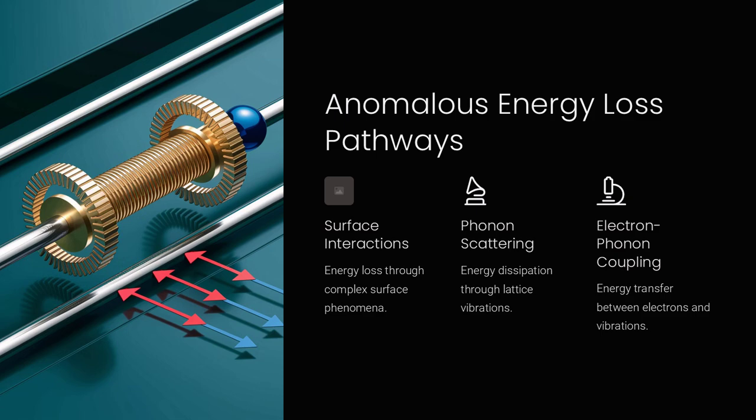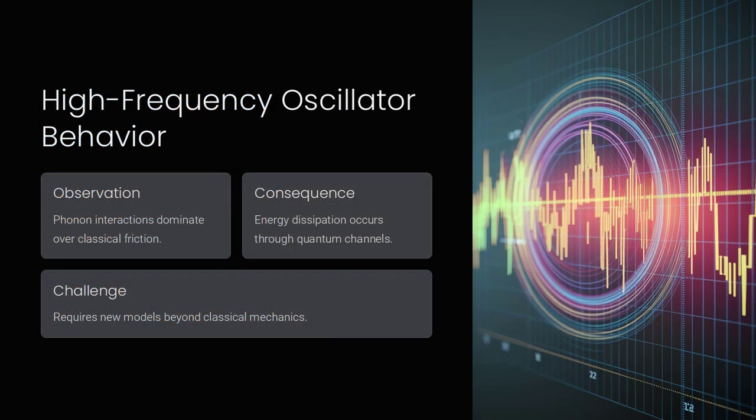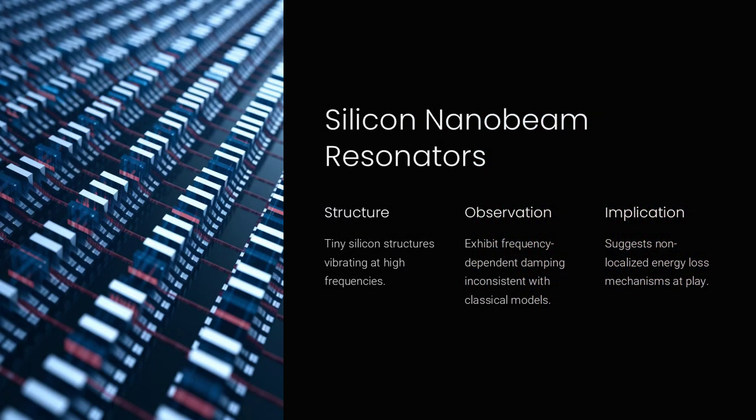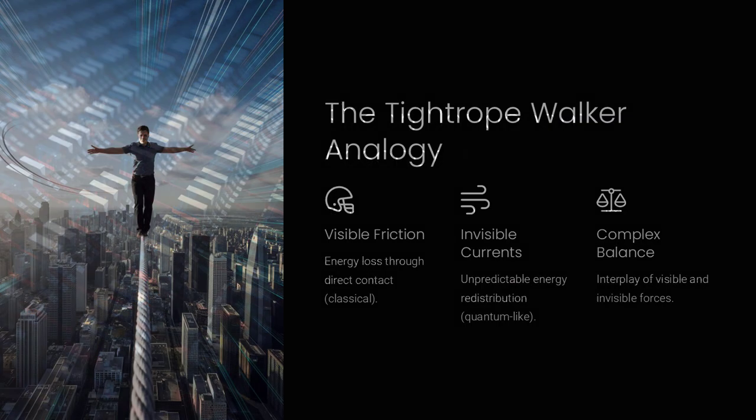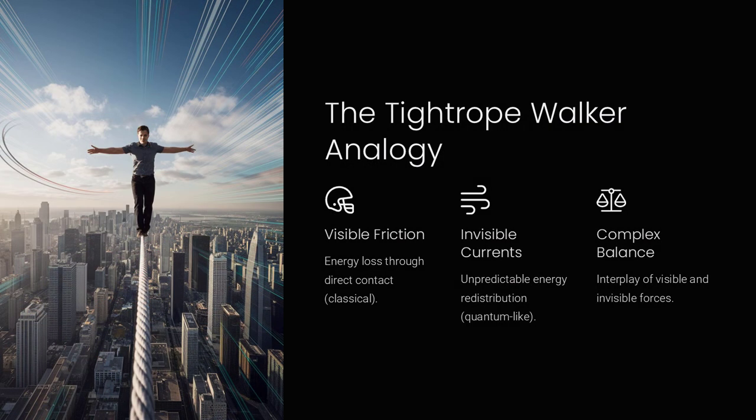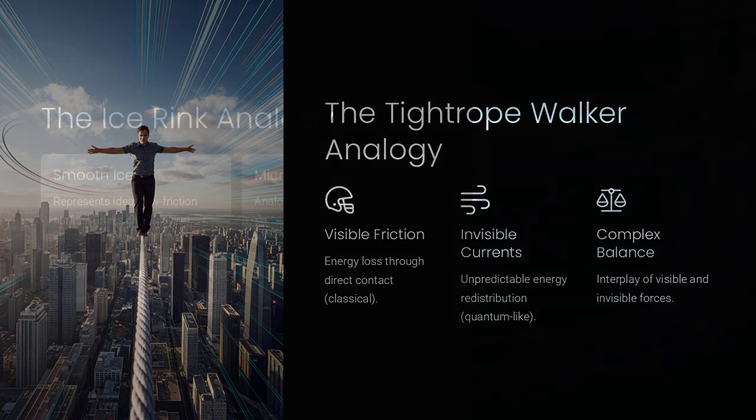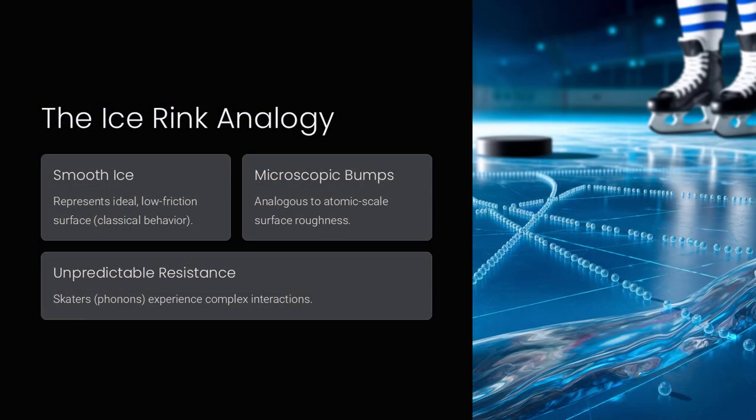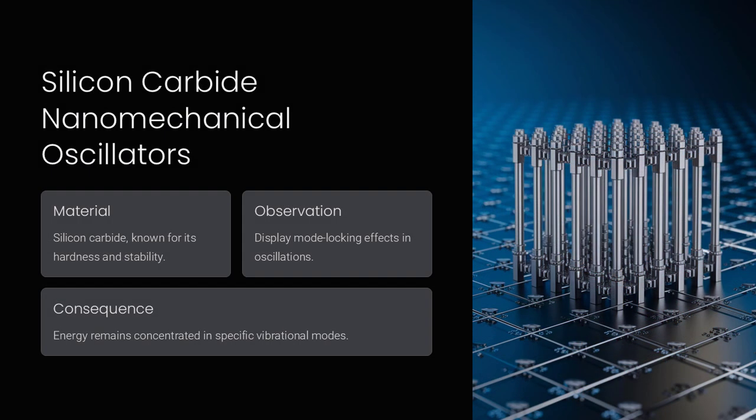On the other hand, some nanoscale oscillators exhibit anomalously high energy dissipation, where vibrations decay faster than predicted by classical models. This has been observed in nanomechanical resonators coupled to electronic or optical systems, where energy transfer mechanisms such as phonon-electron interactions or coupling to quantum vacuum fluctuations introduce new forms of damping that don't exist at larger scales.